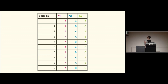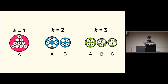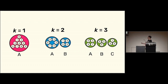Here's a simple example: 10 samples, k-means clustering with k set to 1, 2, or 3. Each circle is a cluster and contains its samples. Going from one cluster to two, a big cluster just splits in two. Going from two to three, cluster A could split, cluster B could split, or a new cluster could form with samples from both A and B.